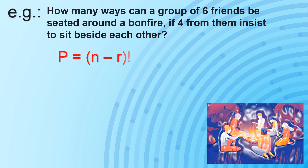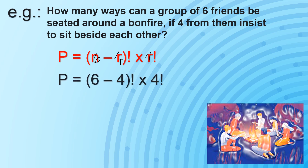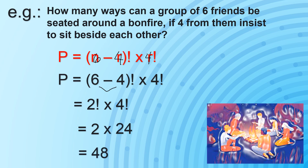For example: how many ways can a group of 6 friends be seated around a bonfire if 4 of them insist to sit beside each other? We use P equals (n minus R) factorial times R factorial. N is 6 friends, and R is 4 — those who want to be beside each other. So our equation becomes P equals (6 minus 4) factorial times 4 factorial, which simplifies to 2 factorial times 4 factorial, giving us 2 times 24, and therefore the answer is 48 ways.